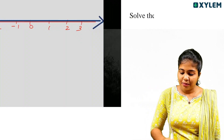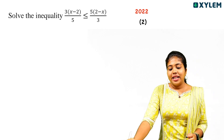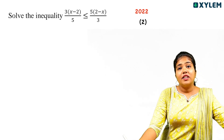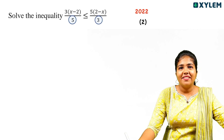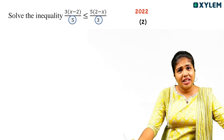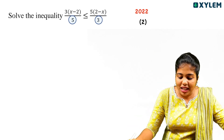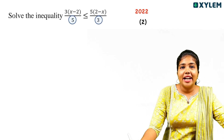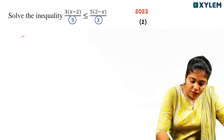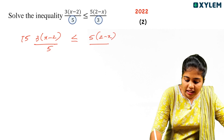Now we are going to solve the inequality: 3 times (x minus 2) divided by 5, less than or equal to 5 times (2 minus x) divided by 3. To clear the fractions, we multiply both sides by LCM of 5 and 3, which is 15. So we multiply 15 into both the left side and right side.